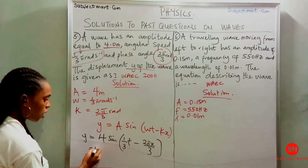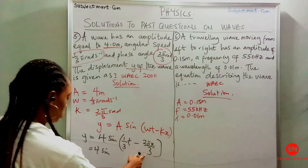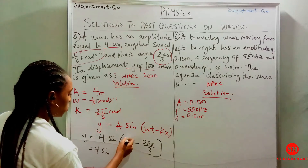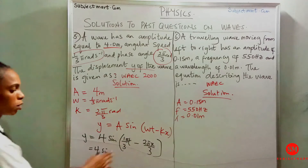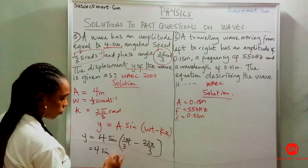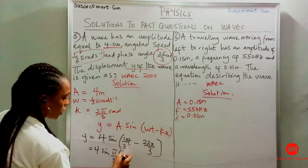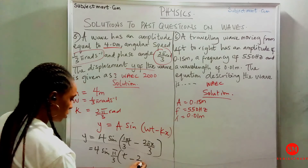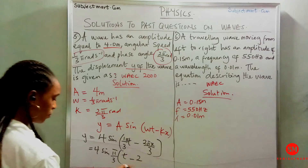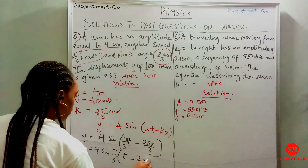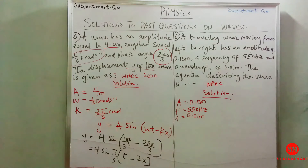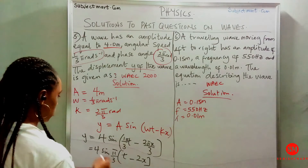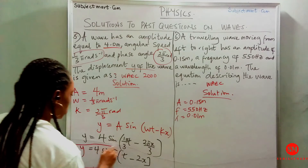From here we can factorize. We have 4 sine — looking at the expression, π over 3 is common to both terms. So we bring out π over 3, leaving us with t minus 2x. So the final equation is y equals 4 sine of π over 3 times (t minus 2x).